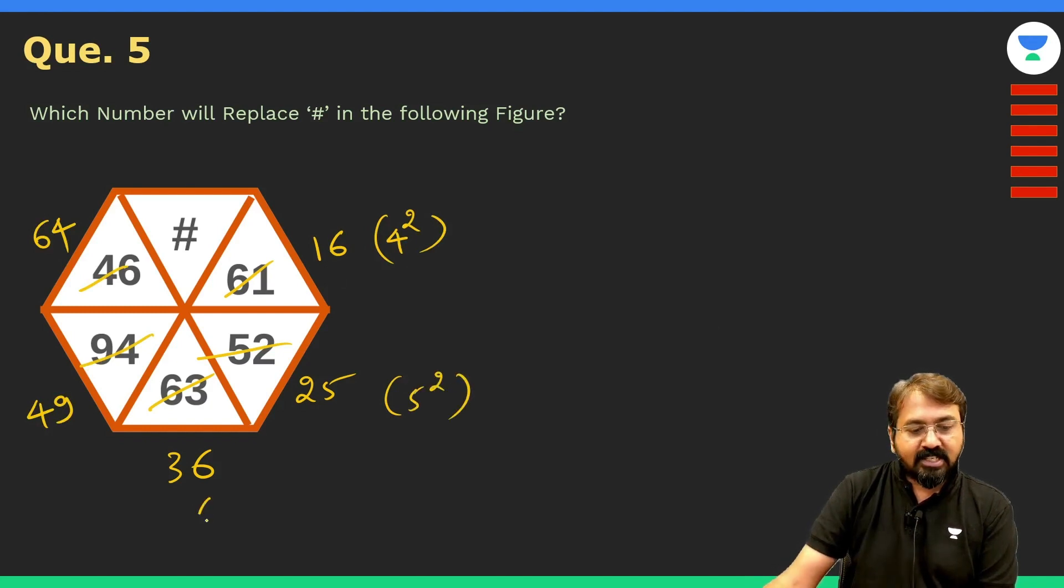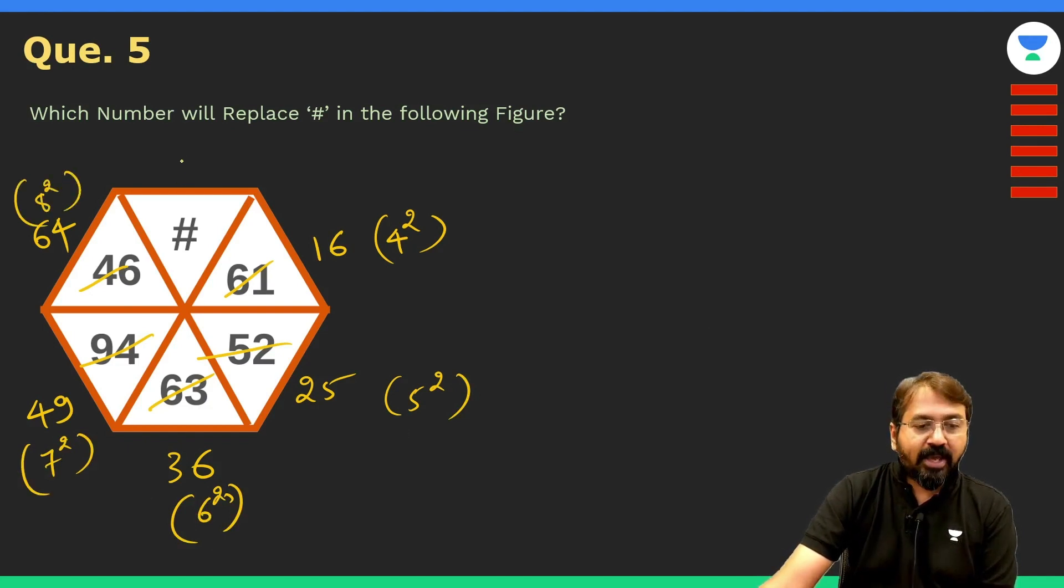So if you check, this is nothing but 4 squared, this is 5 squared, there's 6 squared, this is 7 squared, and 8 squared. So the next number should definitely be 9 squared, because they are in increasing order.